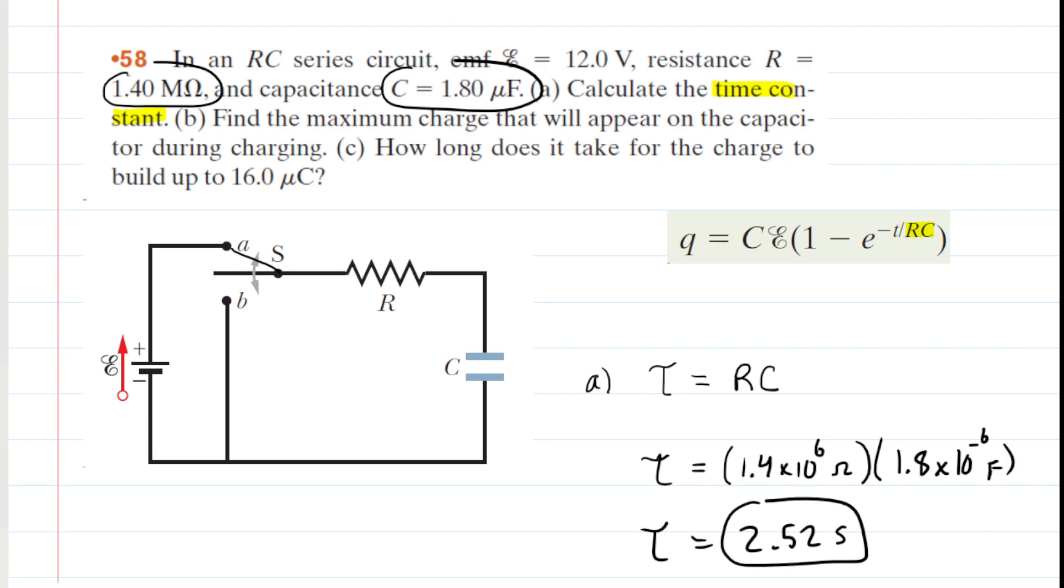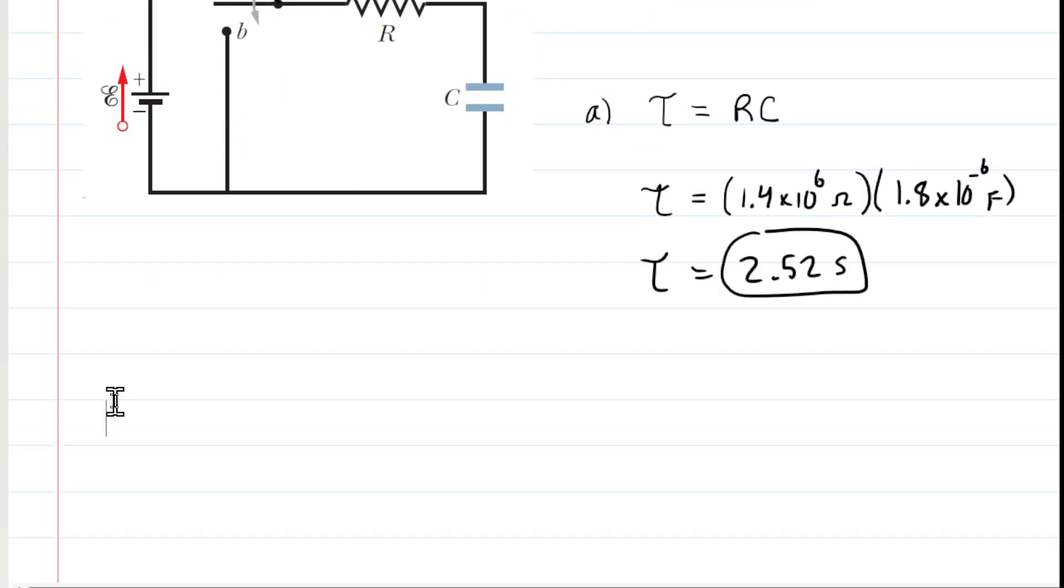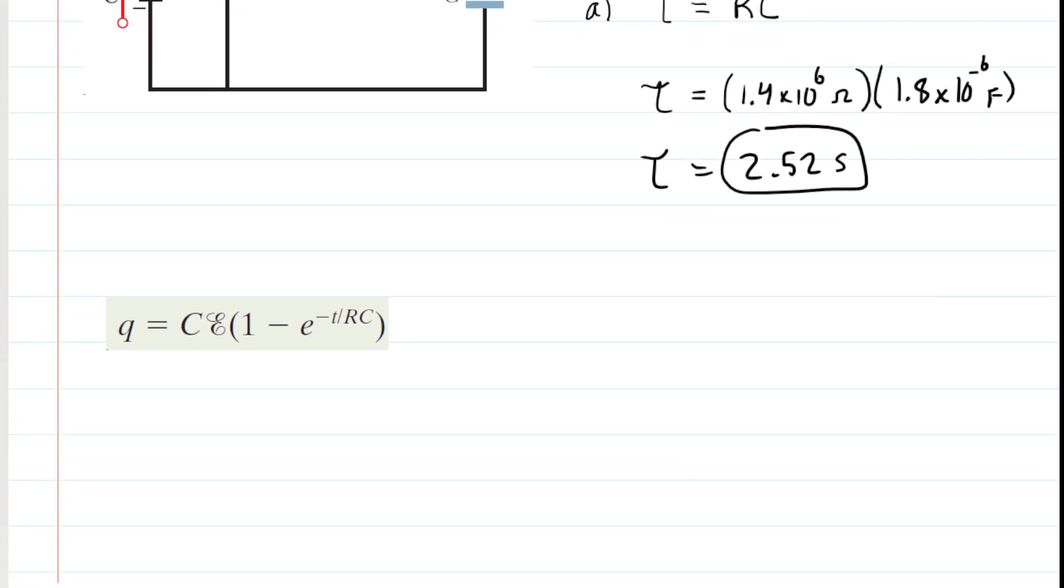In part B, we need to figure out the maximum charge that will appear on the capacitor during charging. So we can examine the equation that governs the amount of charge on the capacitor as a function of time. Now in order for us to maximally charge the capacitor, we have to wait a relatively long period of time. So in essence, to get the maximum charge, we wait for a very long time in order for the capacitor to get charged up. So we're going to let the time approach infinity, which is a mathematical way of saying we're going to wait a very long time.